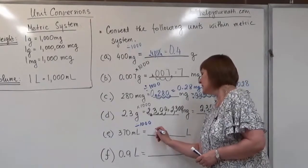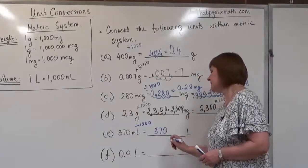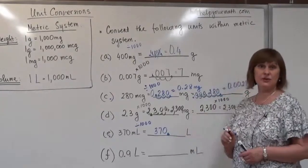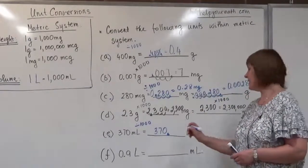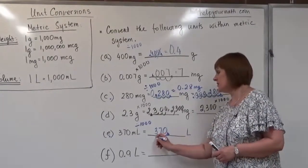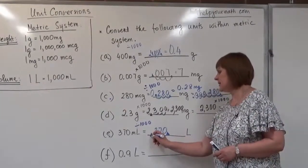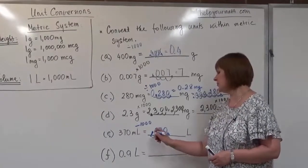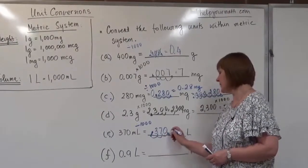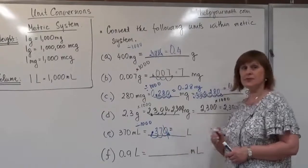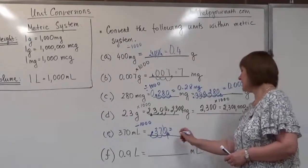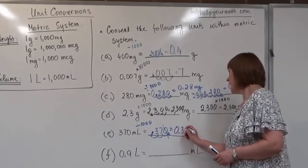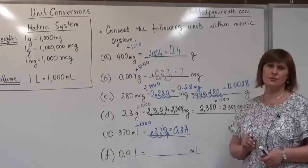We copy 370, drop the decimal point at the end of the number, and shift three places to the left. We can drop the trailing zero, and the answer is 0.37 liters.